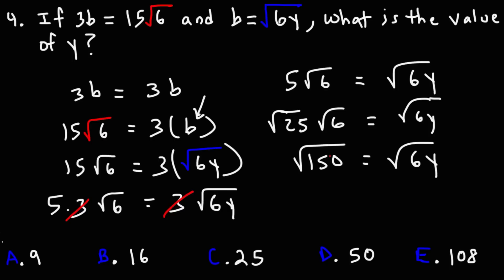So, now, I can set what's inside equal to each other. So, 150 is equal to 6Y. Another way of seeing this, also, this might be easier, is to separate the 6 and the Y. If we do it this way, we can divide both sides by the square root of 6. And we can see that if the square root of 25 is equal to the square root of Y, then Y must be 25.